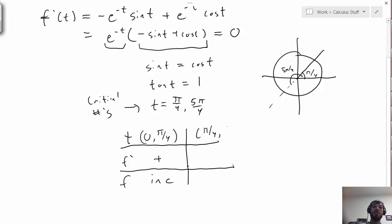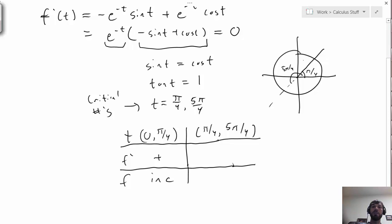From π over 4 to 5π over 4, the next critical value, over this interval we have this chunk where sine and cosine are both positive, but sine is bigger, which makes this negative. So this sum right here will continue to be negative until 5π over 4. Overall, f prime is negative, which means that f is decreasing.